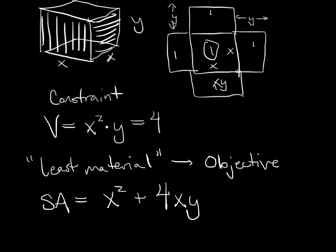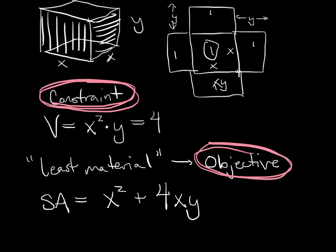All of these optimization problems will pretty much have some constraint equation, and they will have some objective equation. I have to use the constraint to get the objective in terms of only one variable.